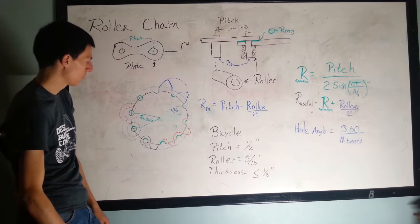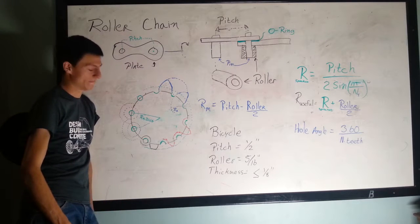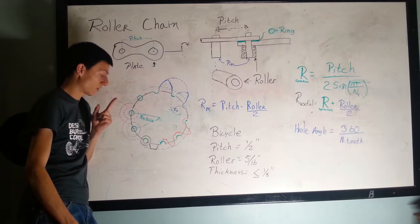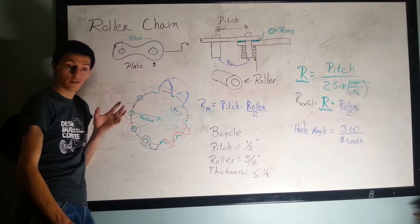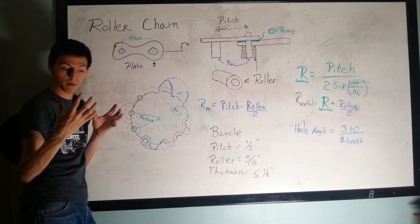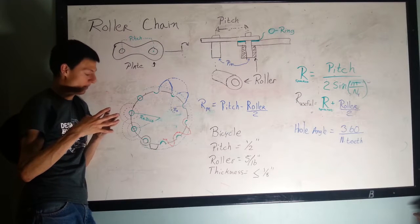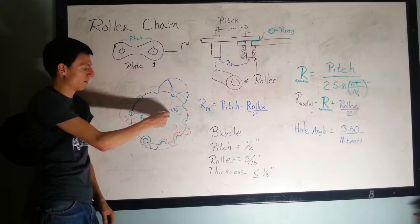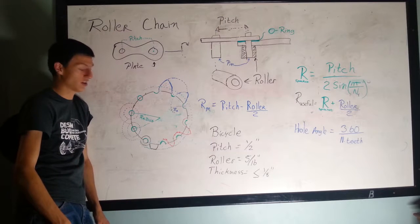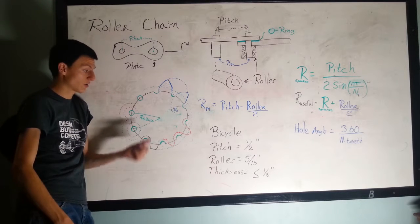If you want to 3D print your own sprockets you can, but if you're going to do a bike sprocket, I have one solid piece of advice: have a piece of steel cut with the bolt pattern of your crank set. The bolts that hold your sprocket onto the crank set are going to see a lot of force and they're going to break the center of the sprocket.